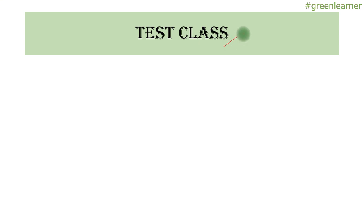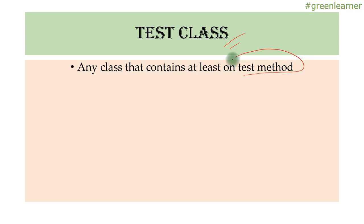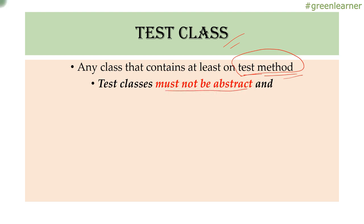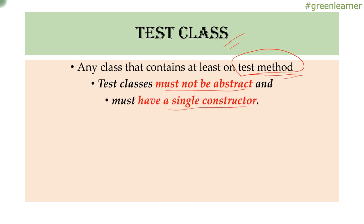So firstly, what are test classes? Any class that contains at least one test method. This is important. Under the test package, the test project structure, you write classes inside those — if that class contains at least one test method, then that class is known as a test class. A test class must not be abstract and must have a single constructor. This is the property they must follow so that the JUnit framework can pick those classes, consider them as test classes, generate the report, and do other things it needs to do.